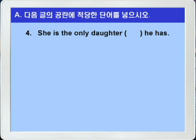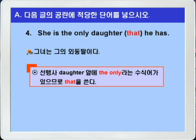4번입니다. 그녀는 그가 가진 유일한 딸이다, 다시 말해 그녀는 그의 외동딸이다. 선행사 daughter 앞에 the only라는 수식어가 있으니까 블랭크에는 that이 들어가면 되겠습니다. 여기 that은 타동사 have의 목적에 해당하는 목적격 관계대명사 that이죠.